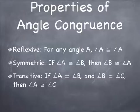Reflexive, symmetric, and transitive properties of congruence should be starting to look familiar. We've talked about these three when discussing algebraic expressions or equations, again when we talked about segment congruence, and now we see the same three properties for angle congruence — the same idea applied to angles today, segments yesterday, and algebraic expressions previously.